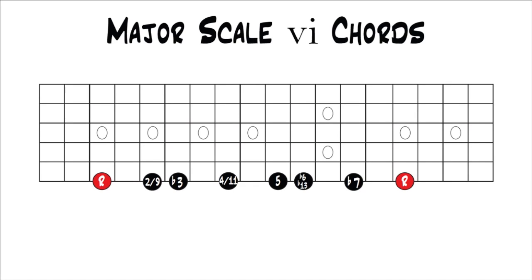There's not much new with the sixth note of the major scale for six chords, because the only difference between building chords off the sixth note versus the second note of the major scale is that when you're building off the sixth note, you have a minor sixth, minor thirteenth, or a flat six, flat thirteen, instead of a natural sixth or thirteenth. All the other intervals are the same, so any chord that you build that doesn't use the flat six or flat thirteen is going to be the same chords that we found in the two chord.